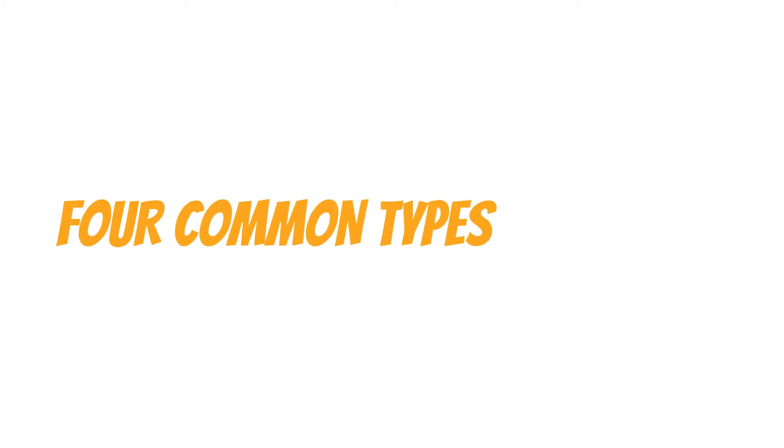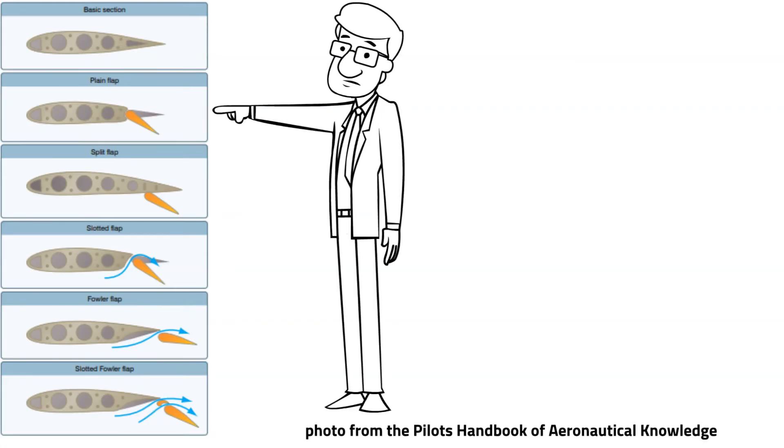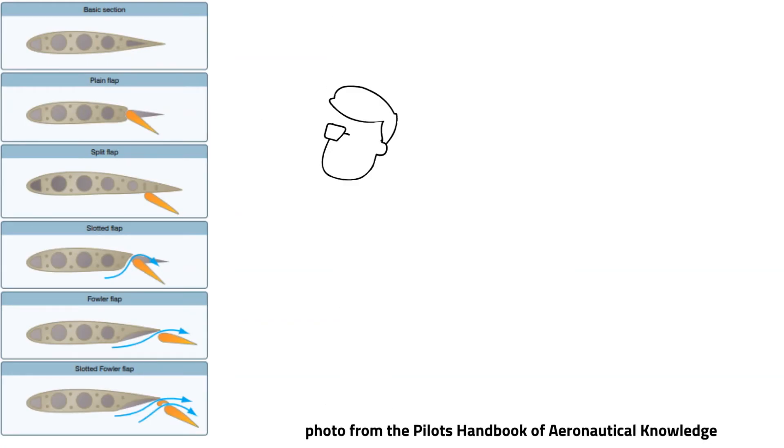There are four common types of flaps. Keep in mind some airplanes don't have flaps. First is the plane flap. This is the most basic type of flap. A split flap is deflected from the lower surface of the airfoil.